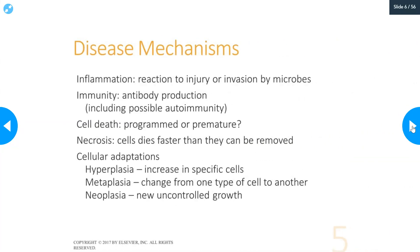Disease mechanisms include inflammation, which is a reaction to injury or invasion by microbes. Injury can be things like a cut, a sprain, or tendonitis. Invasion by microbes includes viruses, bacteria, fungi, and so on. Immunity usually refers to antibody production, although you also have cell-to-cell immunity where certain lymphocytes can destroy body cells that are infected with viruses, are cancerous, or are dysfunctional and need to be eliminated. Immunity and antibody production can also lead to autoimmunity — that's an overproduction of antibodies or production of antibodies against healthy, normal tissue.